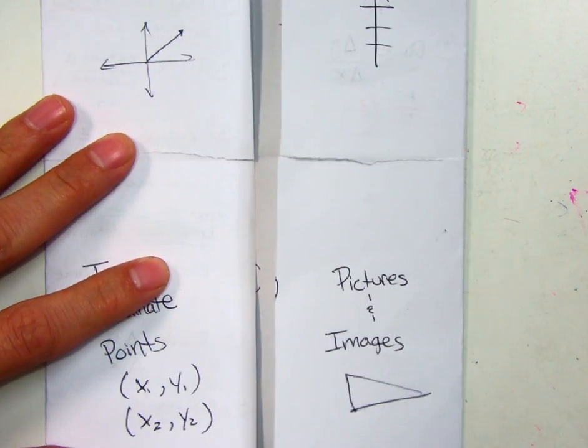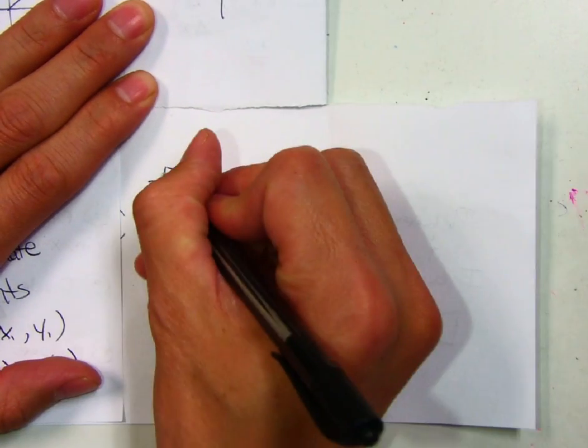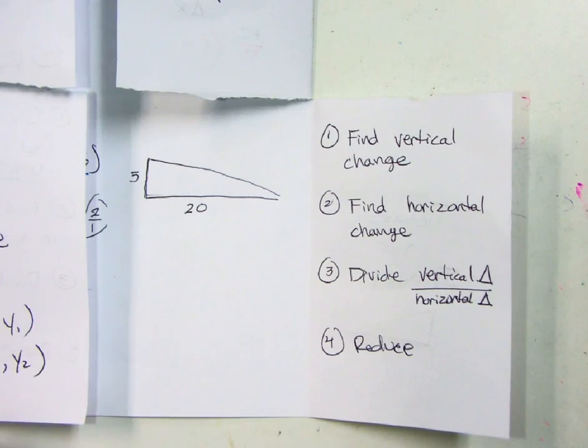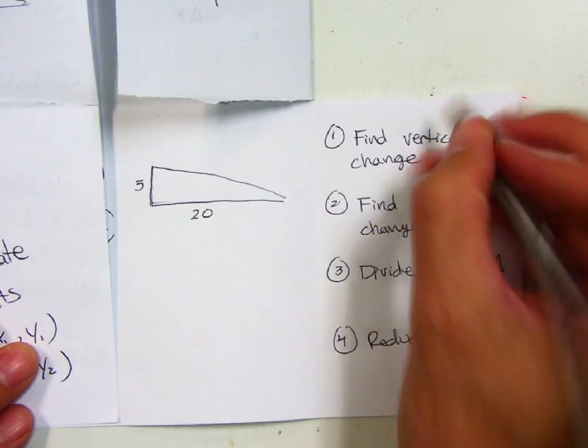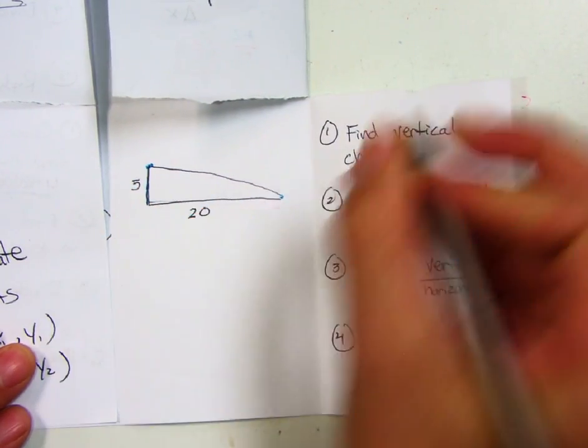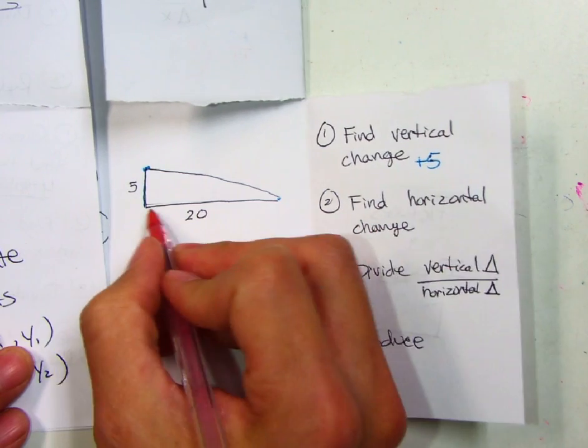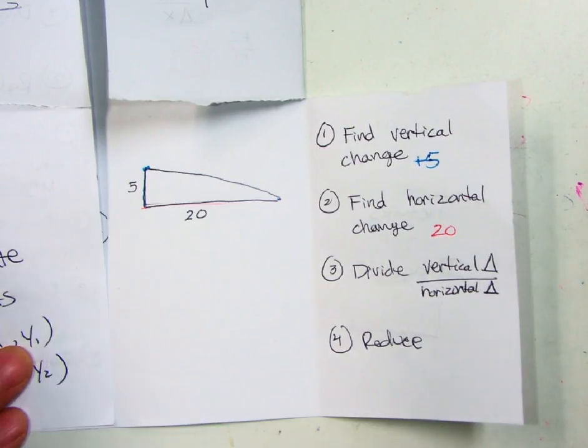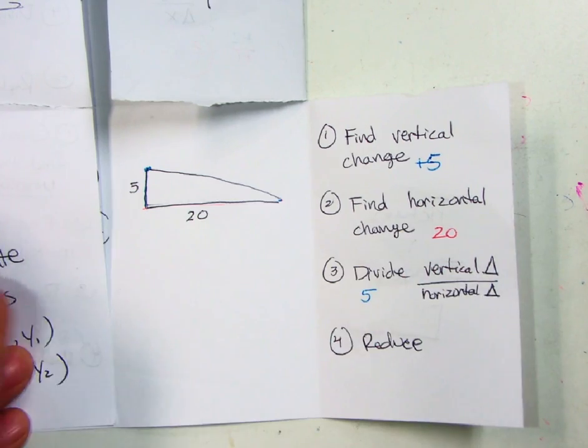So in order to do pictures and images, I start off with a right triangle that has a height of five and a length or a base of 20. For this, I just wrote them all out, but here's the first thing I do. Vertical change. How much did it change vertically? So it moved up a total of five in this case. How much did it change horizontally? Well, from that point all the way across over here, that's 20.